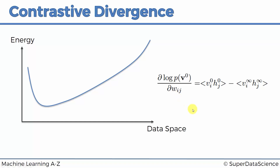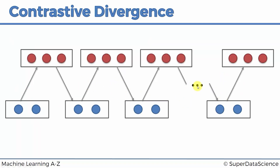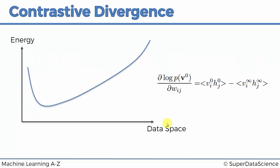The weights are fixed throughout the process — that's very important. The formula tells us how adjusting the weights changes the log probability, and that change is given by this value minus this value: the initial visible-hidden state minus the final reconstructed visible-hidden state. Without going into too much detail on the formula, let's look at this intuitively through the energy curve. The initial state is our data space, and the energy is defined by the weights — so weights dictate the shape of this energy curve.